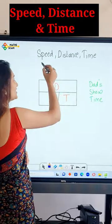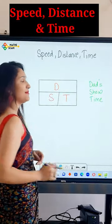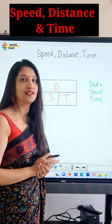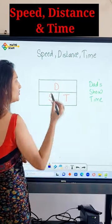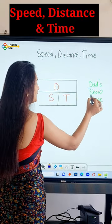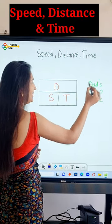Hello everyone. So speed, distance, time — how to remember the formula of speed, distance, time. One mnemonic that I'll show you is the DST triangle.